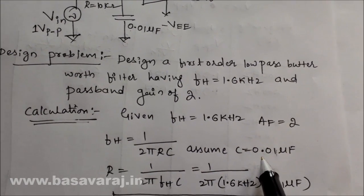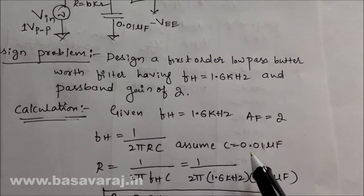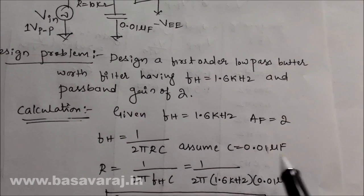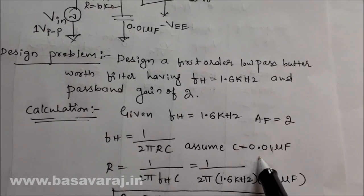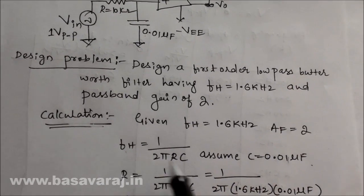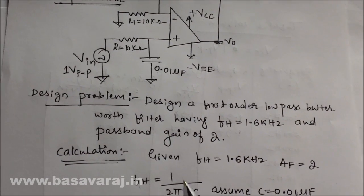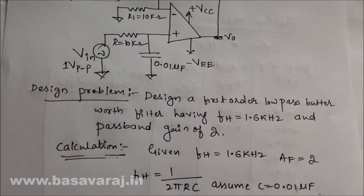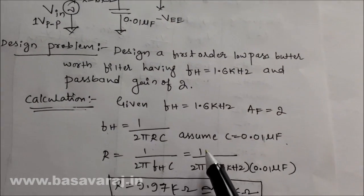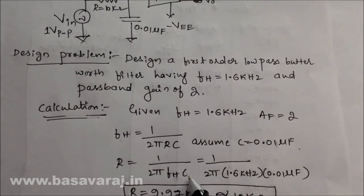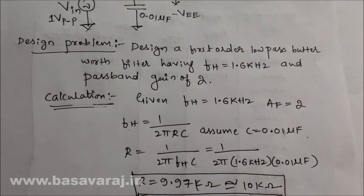First, we assume a standard capacitor value. Capacitors available in the lab have values of 0.1 microfarad and 0.01 microfarad. For this experiment, we assume C = 0.01 microfarad. Using the formula FH = 1 / (2π RC), we solve for R: R = 1 / (2π × FH × C). Substituting the values, we get R = 9.97 kilohms, which we approximate to 10 kilohms.